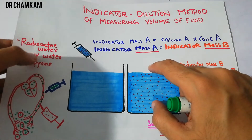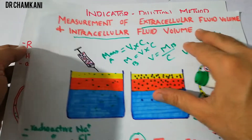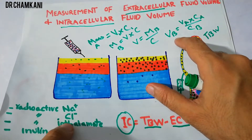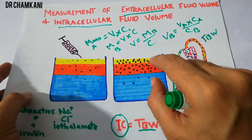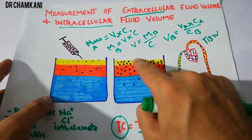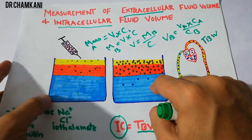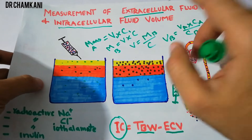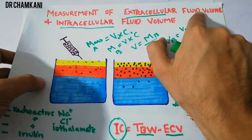When measuring extracellular fluid volume, we used radioactive sodium and radioactive chloride. Those indicators had the property to distribute only into the extracellular fluid and did not enter the intracellular fluid. With the help of those indicators and the indicator dilution method, we could determine both the extracellular fluid volume and the intracellular fluid volume.